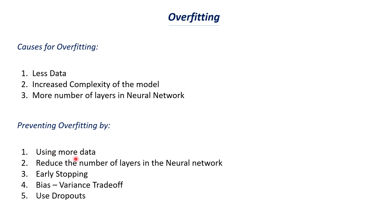To recap, the techniques to prevent overfitting are: first, having a larger dataset; second, reducing the number of layers in the neural network; third, early stopping where the model stops training if it tries to overfit; fourth, bias-variance tradeoff to find the optimum model; and fifth, dropouts where neurons are randomly dropped from the neural network. I hope you have understood overfitting and how to prevent it — thanks for watching, see you in the next upload.